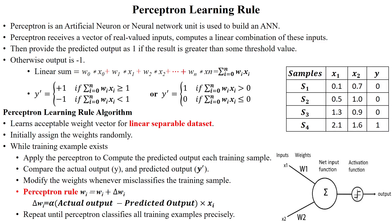Hello everyone, welcome to the perceptron learning rule session. The perceptron is an artificial neuron or neural network unit which is used to build an artificial neural network. The perceptron may be a single layer perceptron or a multi-layer perceptron.